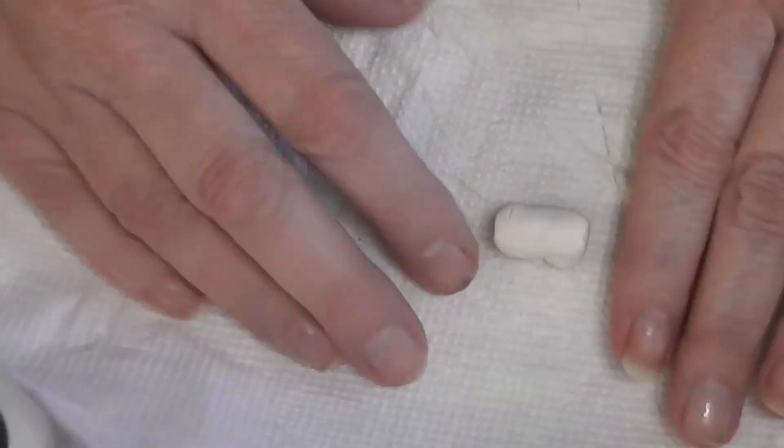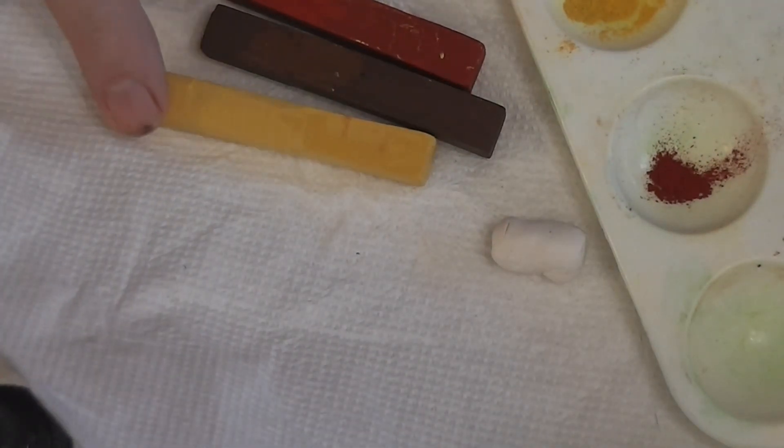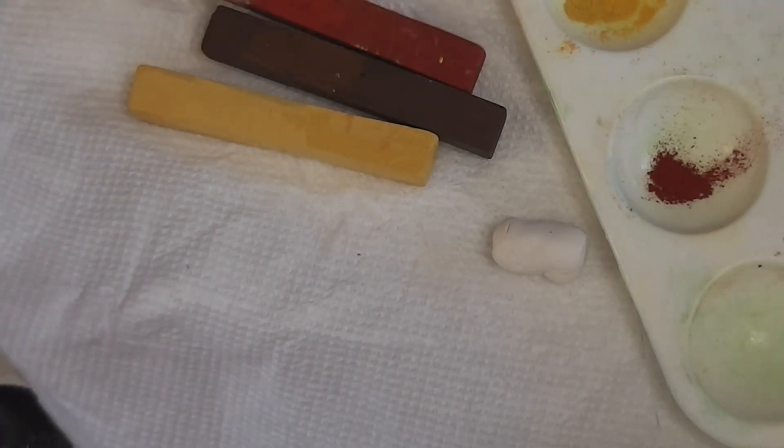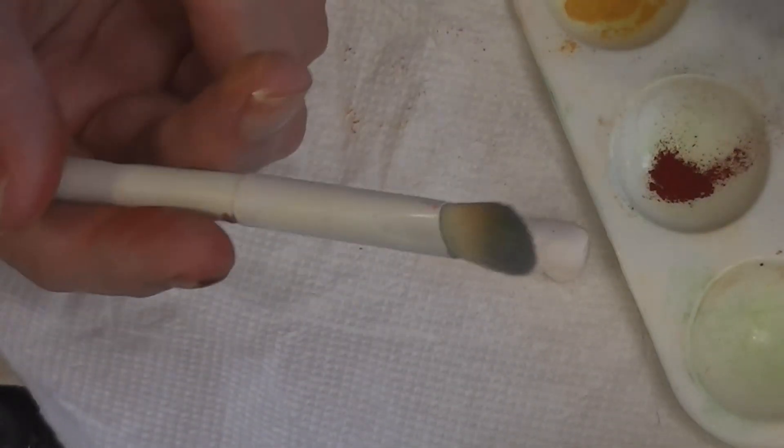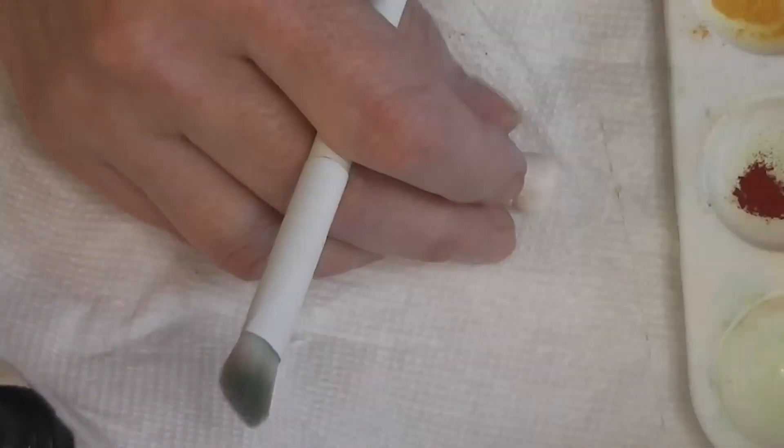So I've got a paper towel here so I don't make a mess on my tray. I've got some artist chalks. I've got the three normal colors we use when we're making baked goods: a yellow ochre, a reddish medium brown, and a dark brown. And I've got my cheap eyeshadow brush. It is clean, it's just stained. I've used this one a lot.